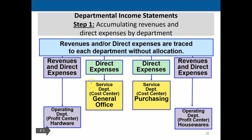Direct expenses are also applied to the service department — in this case the general office — which is a cost center. A service department here means it is internal to the company; it doesn't service outside customers and does not generate revenue. Its purpose is to support the other departments such as hardware and housewares. We also have purchasing as another service department cost center. Hardware and housewares are the two operating departments, each being a profit center.